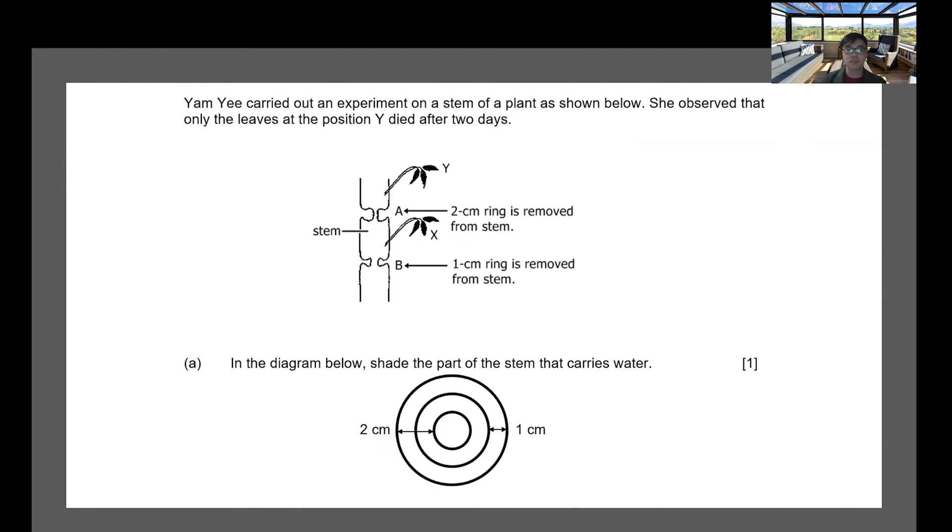Now let's take a look at another question. Yemi actually carried out an experiment on the stem of a plant as shown below. She observed that only the leaf at position Y died after two days. In the diagram below, shade the part of the stem that carries water. Now that's a concept that we learned about WIFO - water inside, food outside. So we underline: plant Y died after two days. And then we say WIFO - water inside, food outside - carries water. So it's the water, it's the inside one. Now over here we can say because we can indicate that here the water carrying tube is being removed. Part B is the food carrying tube being removed. Water inside, food outside.